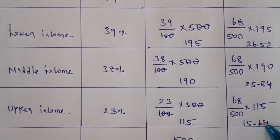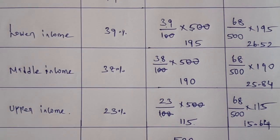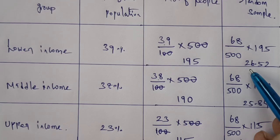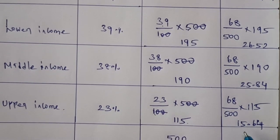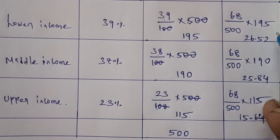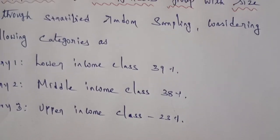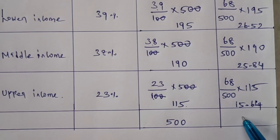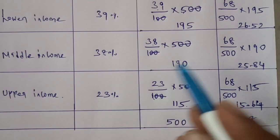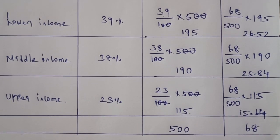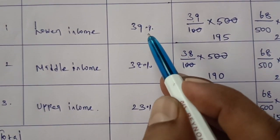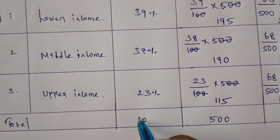The three random sample values are 26.52, 25.84, and 15.64. If you add the three numbers, the answer is 68 random samples, which confirms the answer is correct. The sum of percentages from population is 100%.